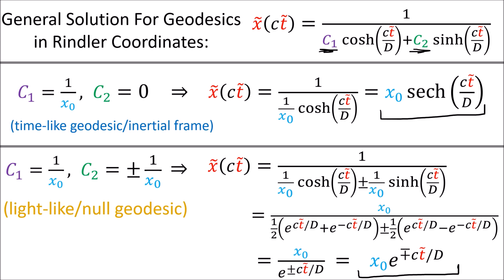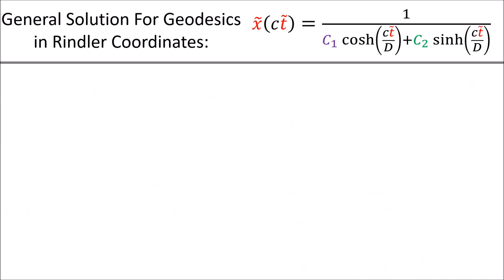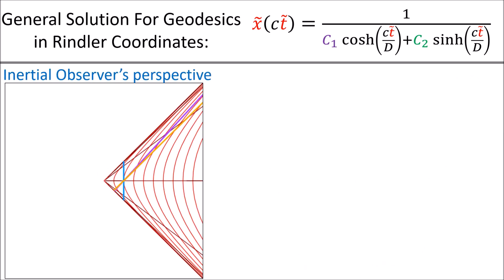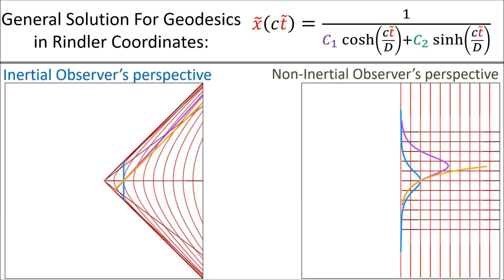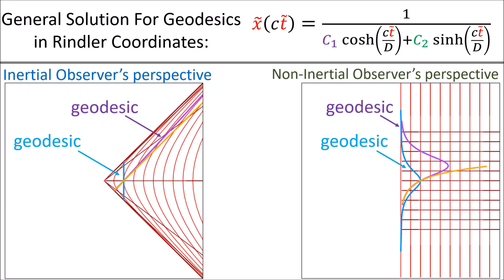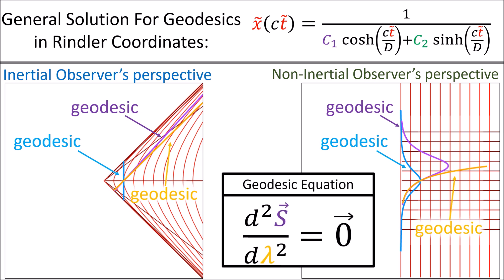So basically, no matter which reference frame we're in — whether it is inertial or non-inertial — we can get the equations of geodesics using the geodesic equation. This equation will always give us the equations of motion for geodesics in any coordinate system.